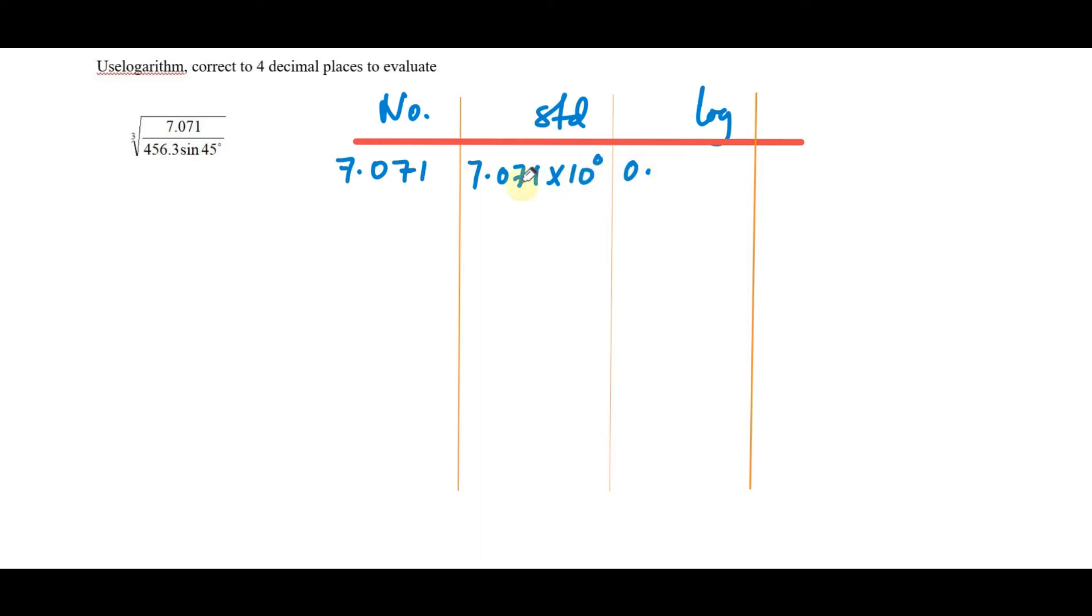The logarithm of 10 raised to power 0 is 0. The logarithm of 7.071 is 0.8495. Remember you can use logarithms from the calculator in this question, or from the four-figure mathematical tables.